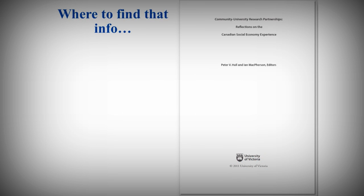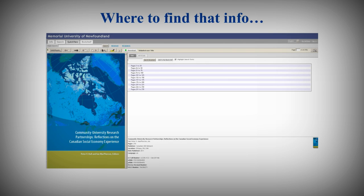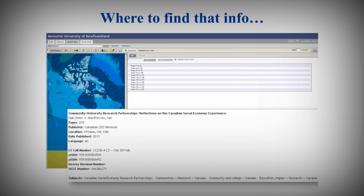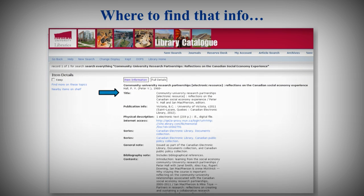Where do you find the information you need to cite an e-book? E-books will have a title page, just like a print book, where you can usually find all of the information you need. It will also be available in the online database — in this example, ebrary — where you access the e-book. Or you can look up a library e-book in the library catalog. All of the information will be listed there, too.